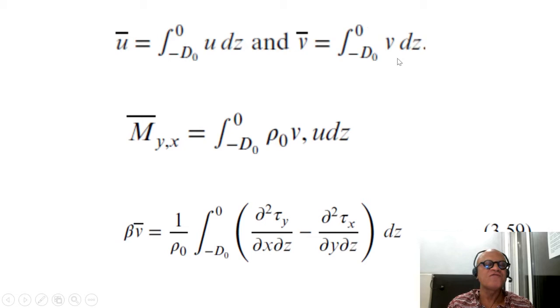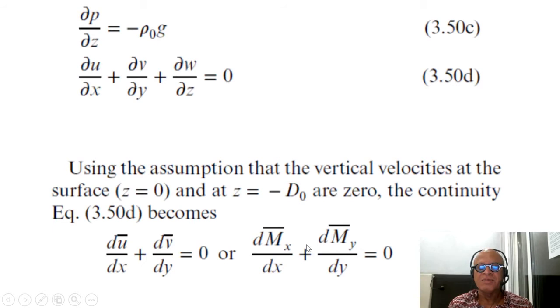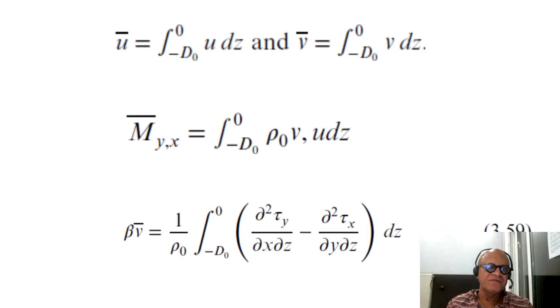So you have u_bar from minus D_0 to 0 of u dz, and v_bar from minus D_0 to 0 of v dz. The integration in the vertical can be written as meridional and zonal transports going from minus D_0 to 0 of rho_0 v dz and rho_0 u dz. So you get the two transport terms that we're talking about here.